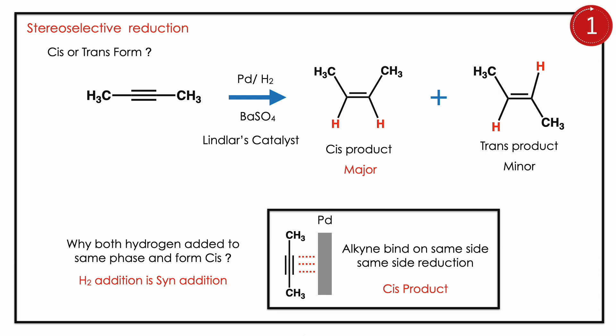That is, cis addition of hydrogen or trans addition of hydrogen. The hydrogen addition is interesting because it's a metallic reduction. The alkyne binds with the metal — the metal possesses positive charges and the alkyne is electron-rich, so binding happens on the same face, same side. Therefore, the reduction also happens on the same face, and both hydrogens attach from the same angle, leading to the cis product.